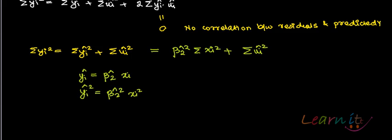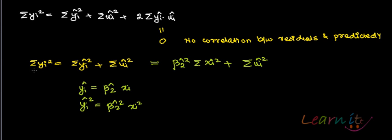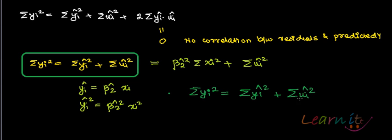We will use this formulation later, but you must remember that: summation of yi-squared equals summation of yi-hat-squared plus summation of ui-hat-squared.